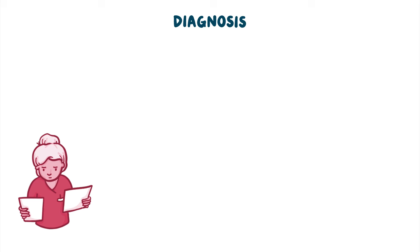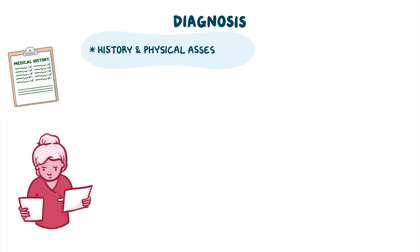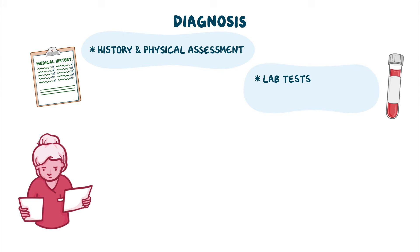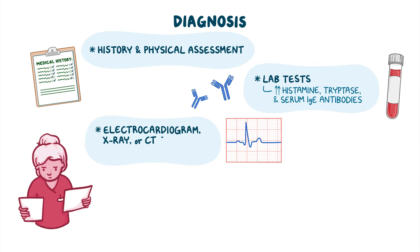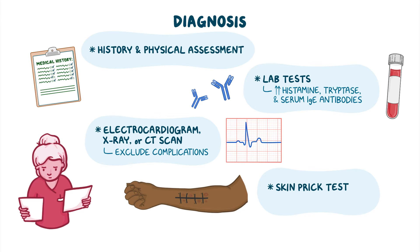Diagnosis of anaphylactic shock starts with the client's history and physical assessment, followed by lab tests, which might reveal high serum levels of histamine, tryptase, and serum IgE antibodies. An electrocardiogram as well as imaging studies like an x-ray or CT scan can be used to exclude possible complications. Finally, in order to identify the allergen, a skin prick test can be done — small drops of allergens are pricked into the skin to see if there's evidence of an allergy, like raised itchy red bumps or wheals.